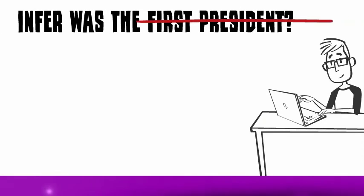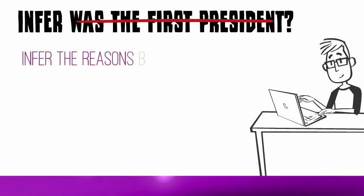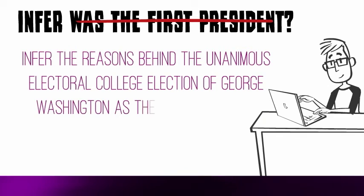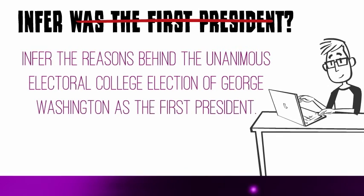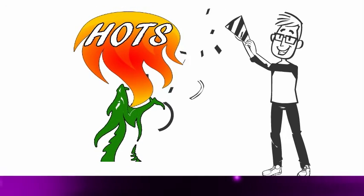Combined with his HOTS verb, infer, he gets a new, detailed, complex question: Infer the reasons behind the unanimous electoral college election of George Washington as the first president. Just like that, Cameron has a HOTS question. Did it take him time to construct?